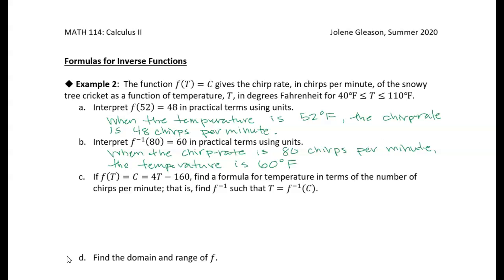All right, so the next part of this question gives us an actual function — a pretty simple linear function: 4T minus 160. And we're asked to find a formula for temperature in terms of the number of chirps per minute, which is essentially asking for the inverse function. So let's write down what we have. We're given C equals 4T minus 160.